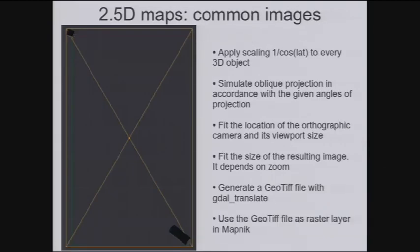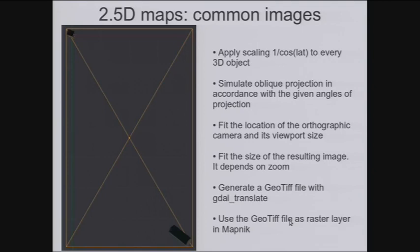Now to the second approach: one common image for all building models. In this example we have two building models. One is on the top and the other one is on the bottom. Basically the same steps, but at the end we have to generate a JGW file with GDAL translate. And then this JGW file is used as a raster layer in Mapnik. So here's the resultant image. Here's our top model and here's our bottom model.